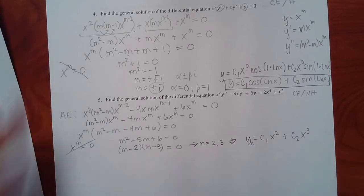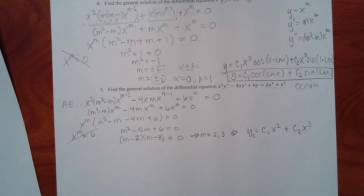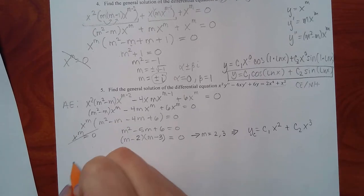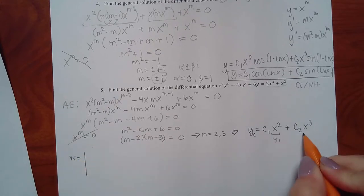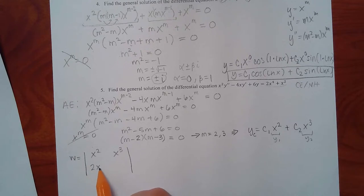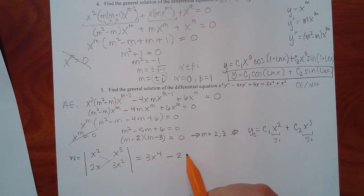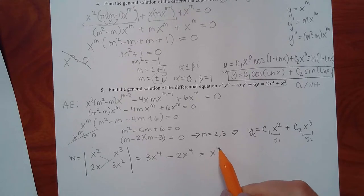Since it's non-homogeneous, we need yp as well, using the Wronskian method. Set up W with y1 = x squared and y2 = x cubed; derivatives are 2x and 3x squared. Doing the determinant: 3x to the fourth minus 2x to the fourth gives W equals x to the fourth. Now for W1, the first column is replaced with zero and f(x). But the equation must be in standard form first — y double prime must be by itself.